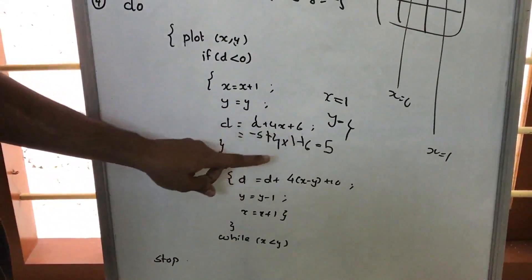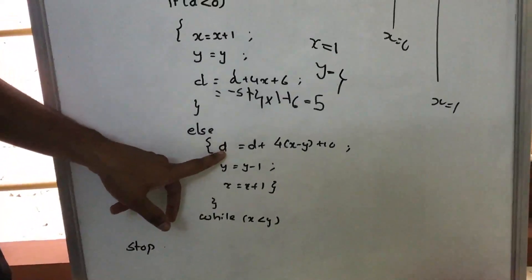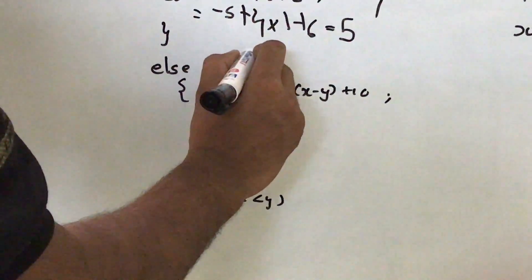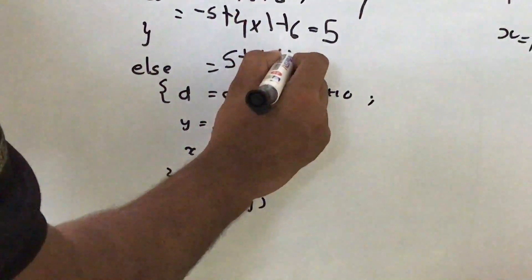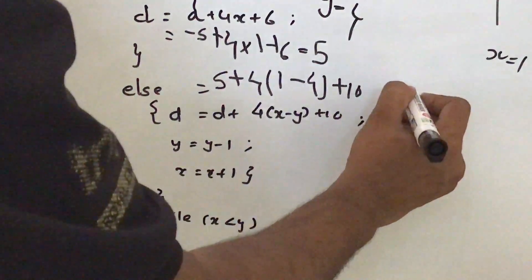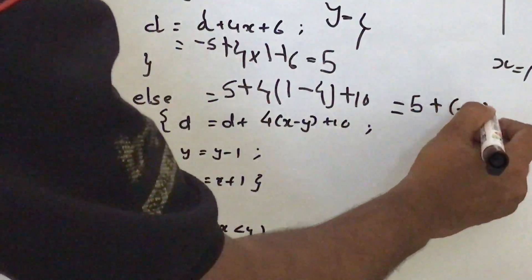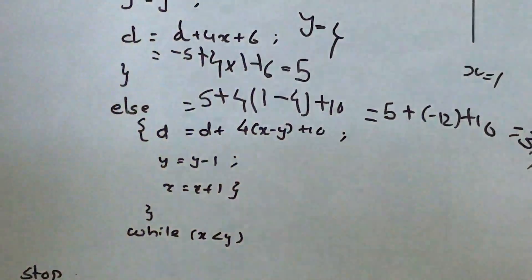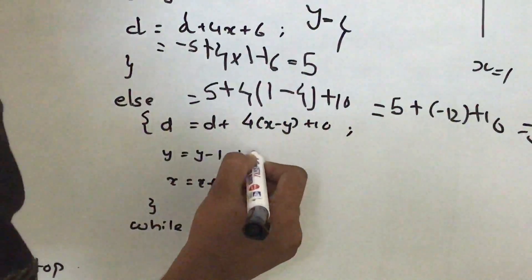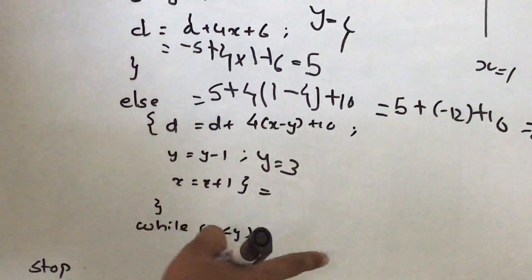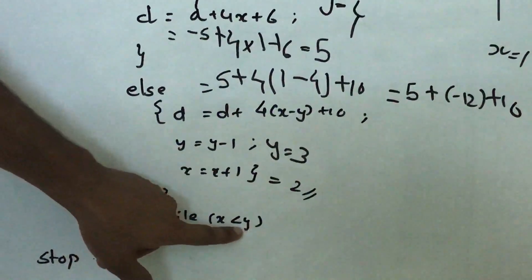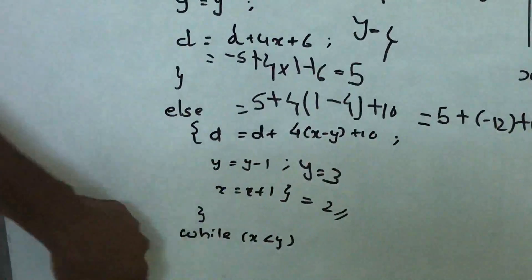Since d is greater than 0, the new d will be d plus 4x minus 4y plus 10. So that is: d is 5, plus 4 into 1, minus 4 into 4, plus 10 — that is 5 plus 4 minus 16 plus 10, equal to 3. So value of d is 3. Then y is equal to y minus 1: y was 4, so new y is 3. And new x is equal to x plus 1, that is 1 plus 1 equals 2. Checking x less than y: x is 2, y is 3 — yes, so we enter the loop again.